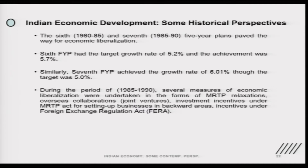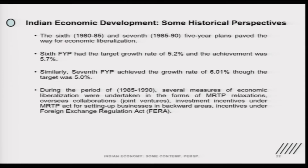Even in the contemporary context, whatever we see in terms of consolidation of banks, banking sector upheavals, and different restructuring programs in terms of entrepreneurship initiatives — these measures are linked to prior developments. Pre-1991 is really important to understand, especially the first 10 years of that decade. The 6th and 7th Plans were successful: the 6th Plan had a target of 5.2 percent growth but achieved 5.7 percent, and the 7th Plan also achieved a growth rate of 6 percent and beyond, against a target of around 5 percent.